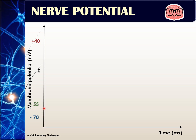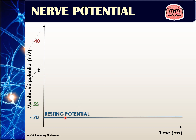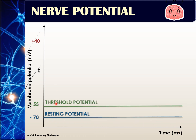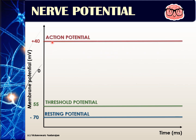These values are important because they represent specific potentials in the nerve. Negative 70 is the resting potential — the electrical charge in a nerve that is not transmitting an impulse. Negative 55 is the threshold potential — the electrical charge in a nerve getting ready to transmit an impulse. And positive 40 is the action potential — the electrical measurement of a nerve that is transmitting an impulse.